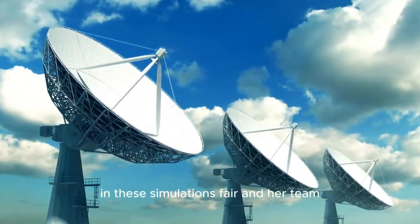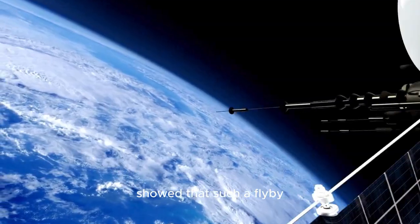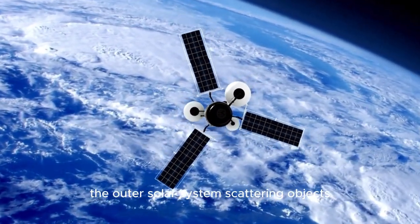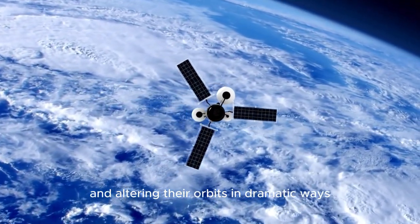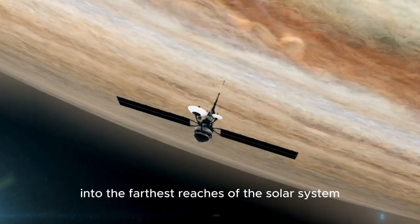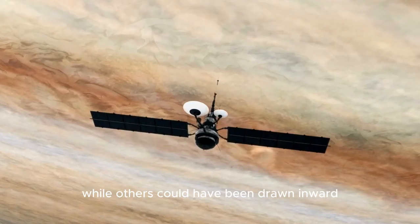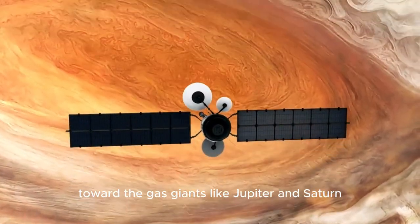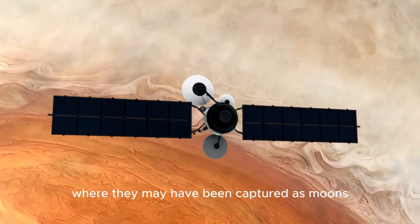In these simulations, Fair and her team showed that such a flyby could have sent shockwaves through the outer solar system, scattering objects and altering their orbits in dramatic ways. Some objects would have been pushed outward into the farthest reaches of the solar system, while others could have been drawn inward, toward the gas giants like Jupiter and Saturn, where they may have been captured as moons.